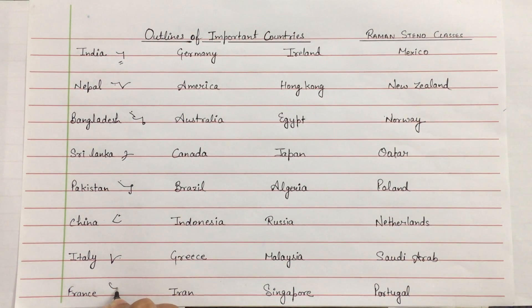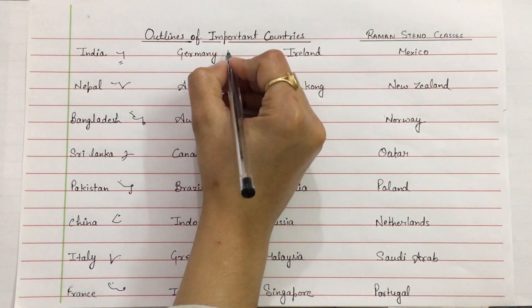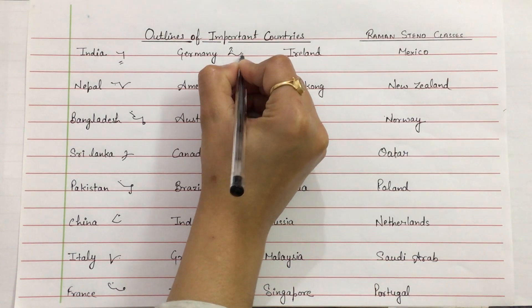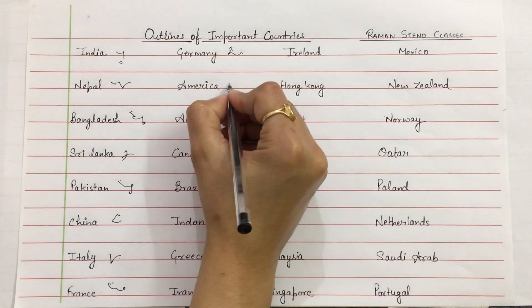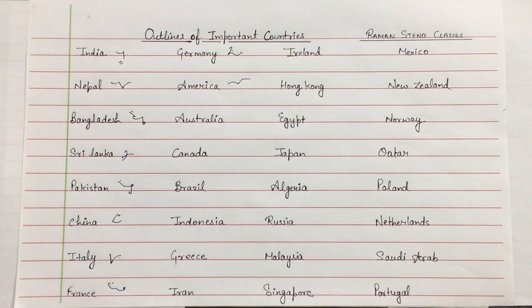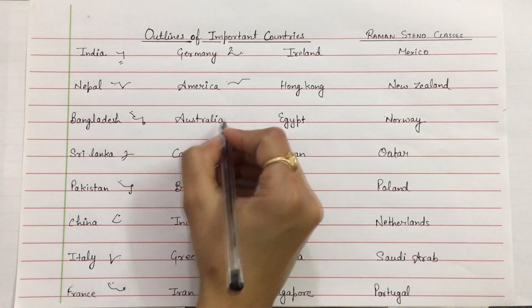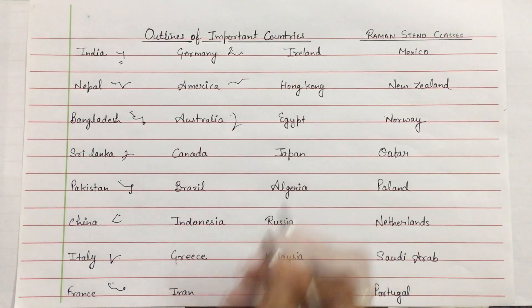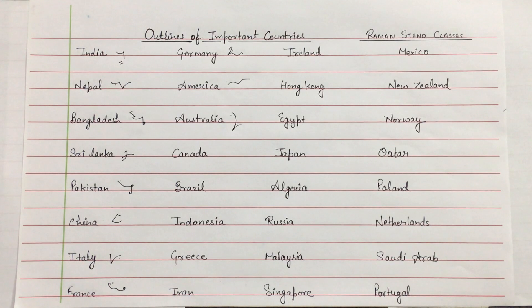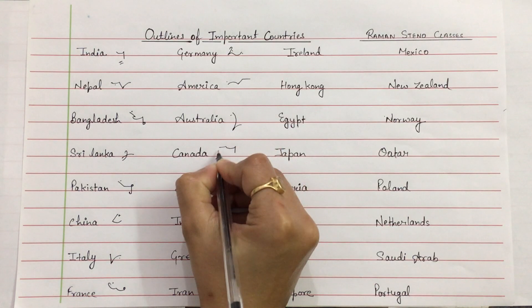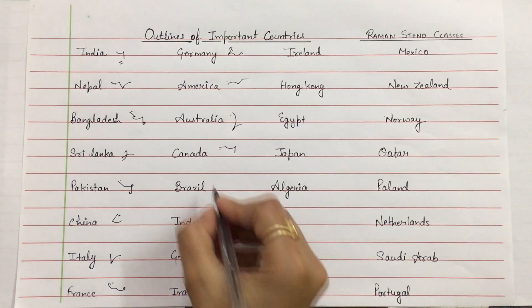France — above the line. Germany — on the line. America. Australia. Canada. Brazil.